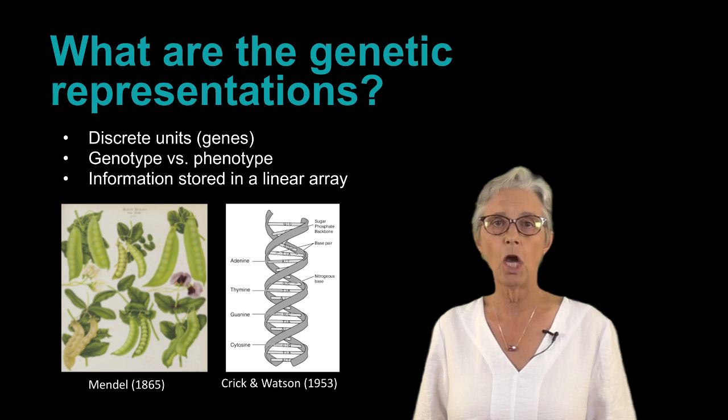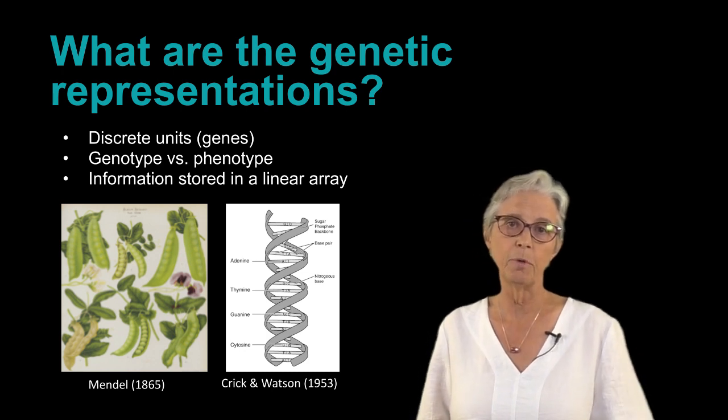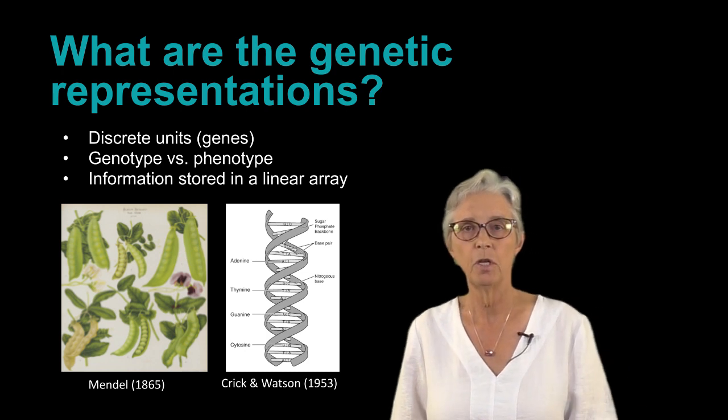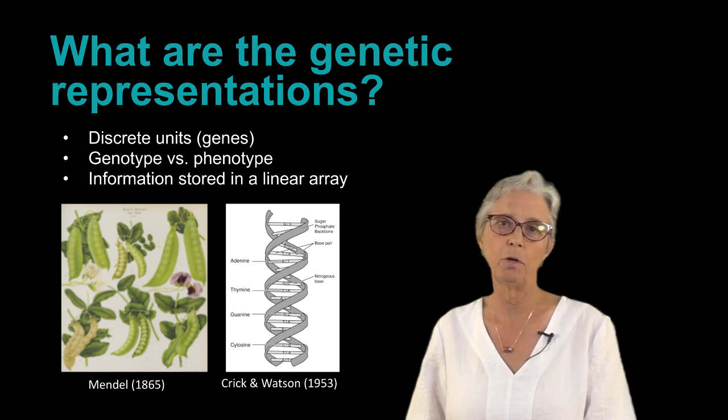And the final thing we need to know is that these genes are organized in a linear array which today we call a chromosome. This understanding really started with Mendel in 1865, and the culmination of it was the Crick and Watson discovery of the structure of DNA.